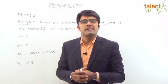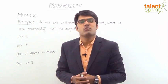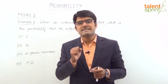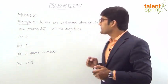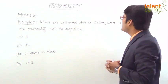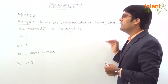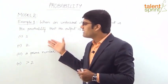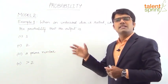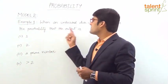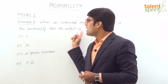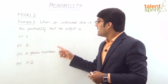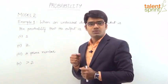Let's discuss the probability case topic model 2, in which we have dice-based questions solved. Let's see example 1. When an unbiased dice is rolled, what is the probability that the output is 1, output is 2, output is a prime number, and output is greater than 2?